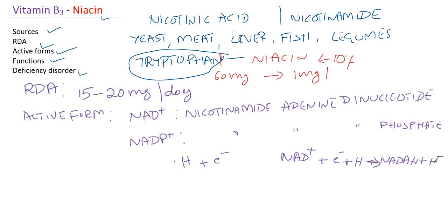So NAD+ can accept one full hydrogen atom — that is one proton and one electron — as well as one additional electron. This covers the source, daily requirement, and active forms of niacin.